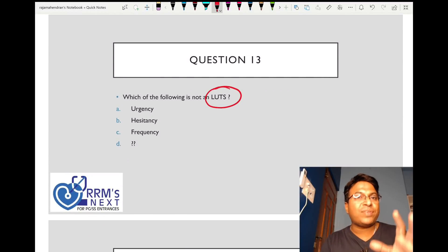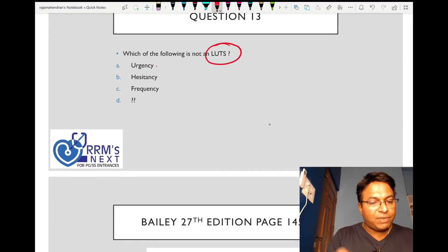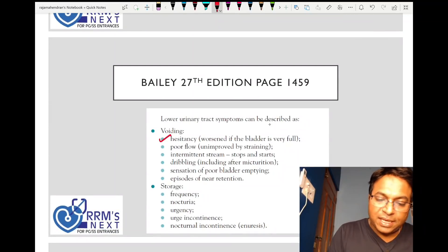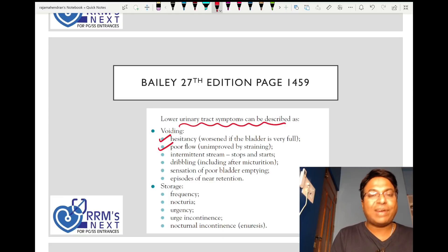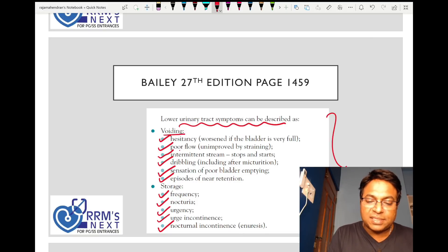Which is not a LUTS, lower urinary tract symptoms? This question is directly from Bailey and Love. Urgency, hesitancy, frequency are all LUTS symptoms. You can see LUTS symptoms described in page 145 of Bailey: poor flow, intermittent stream, dribbling, sensation of incomplete emptying, retention, frequency, nocturia, urgency, urge incontinence, and nocturnal incontinence. This is a repeat question from national board exam.